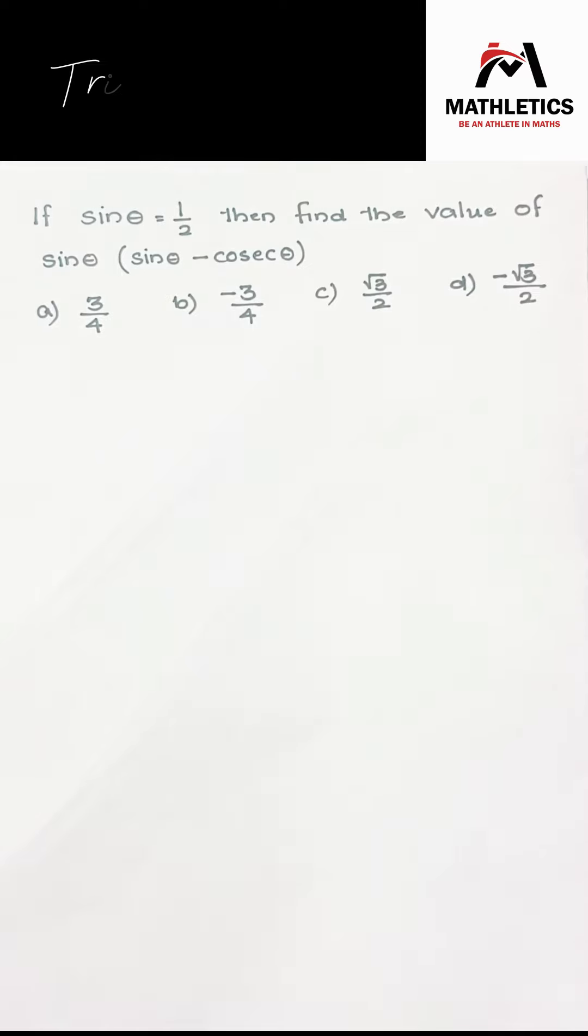Hello students, we have a question on trigonometry. If sin θ = 1/2, then find the value of sin θ × (sin θ - cosec θ). Four options are given: a) 3/4, b) -3/4, c) √3/2, and d) -√3/2.